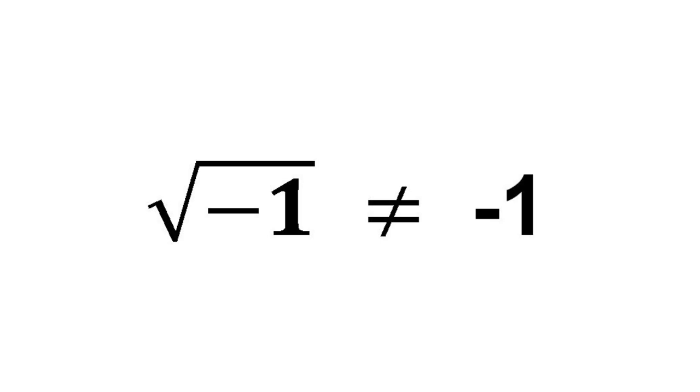Surprisingly, they started accepting this anomaly, and many of them even started naming it. They called it as imaginary number, and it was denoted as i.